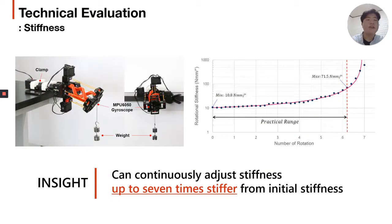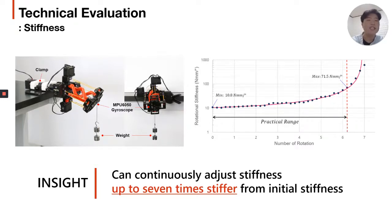To investigate device capability, we conducted a series of technical evaluations. In short, we found that our device is able to become seven times stiffer than its most elastic state, and can change stiffness continuously within that range. For details about the evaluation and additional properties measured, please refer to the paper.